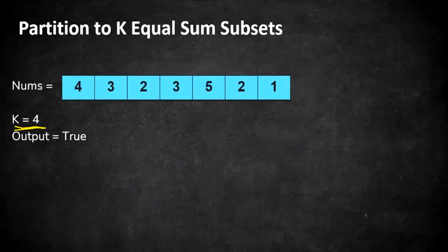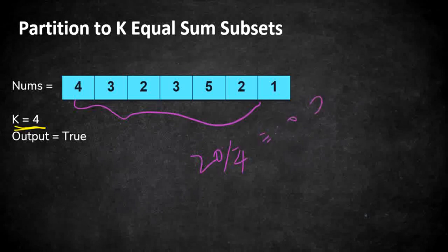Here the total sum of the array is 20. So we have to divide the whole array into four equal parts. So 20 remainder 4, if the 20 remainder 4 is equal to 0 then it is possible to divide the array into four equal parts or k equal parts. If not we can directly return false because we cannot divide the array into equal parts. Here 20 by 4 is giving you remainder 0 so it is possible to divide the array into four equal parts.